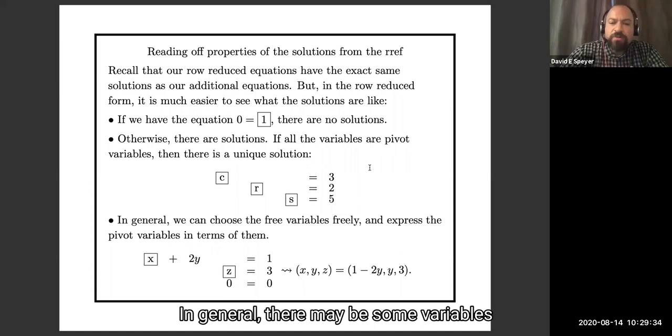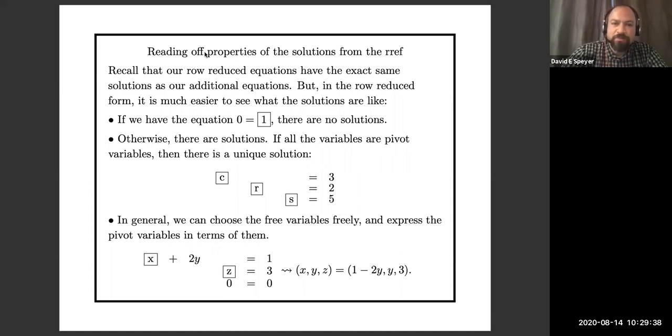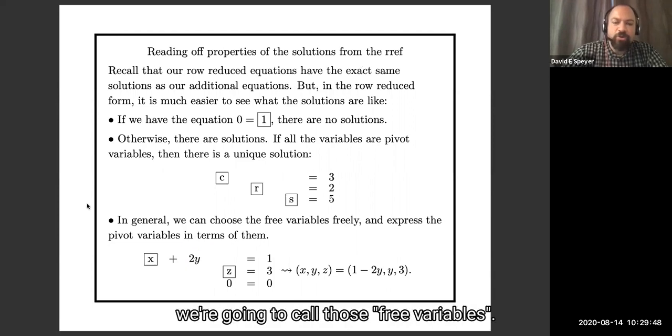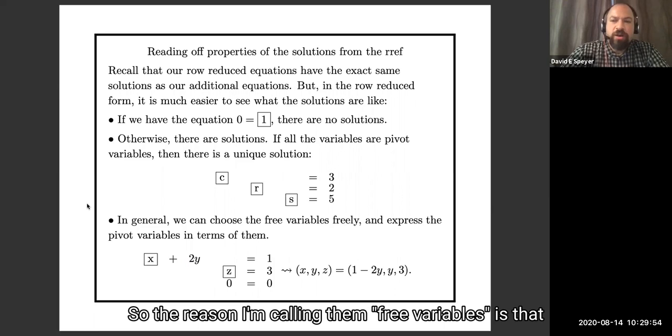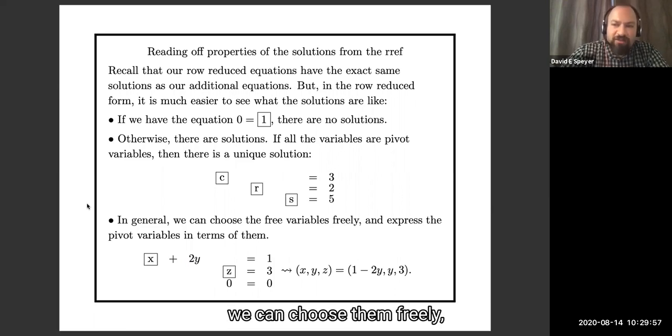In general, there may be some variables left over which are not pivot variables, like this y over here. And I said in the last lecture, we're going to call those free variables. So the reason I'm calling them free variables is that we could choose them freely.